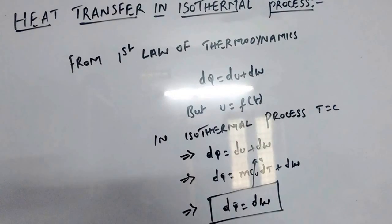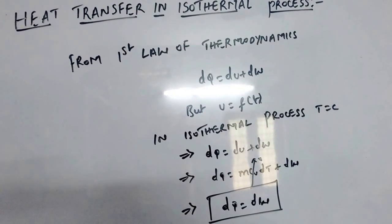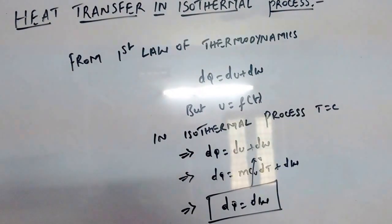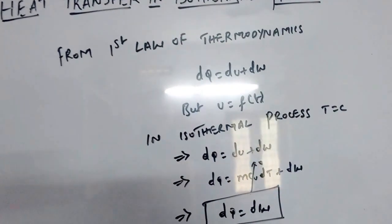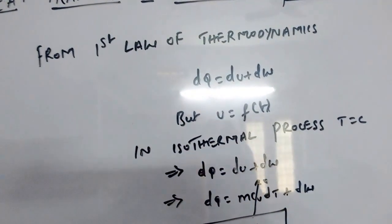We are going to discuss about heat transport that takes place in an isothermal process. Consider an ideal gas undergoing an isothermal process. From the first law of thermodynamics, we can write dQ is equal to du plus dw.